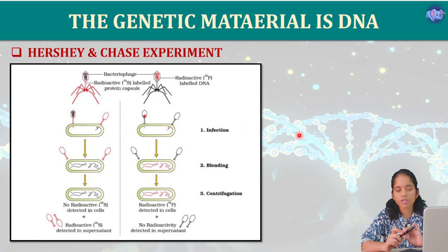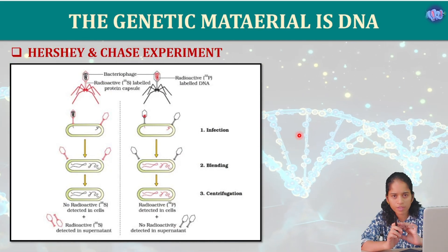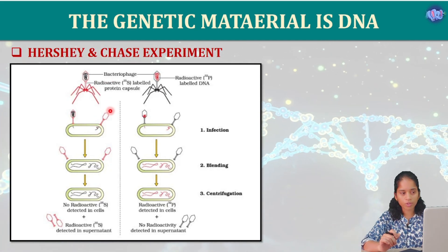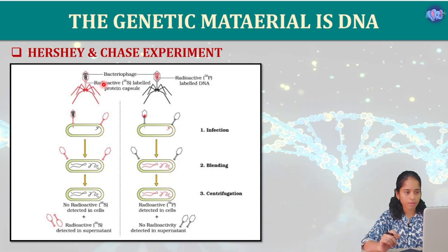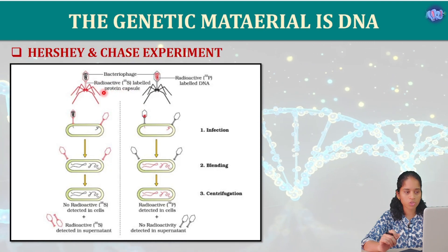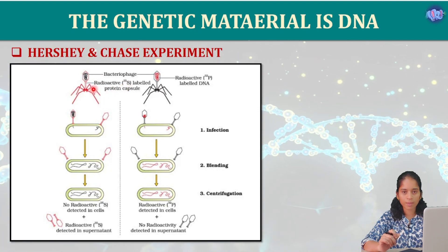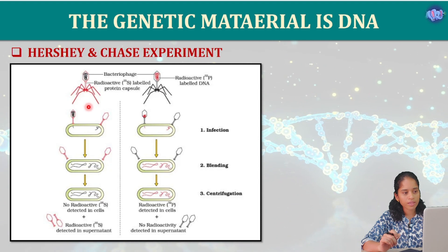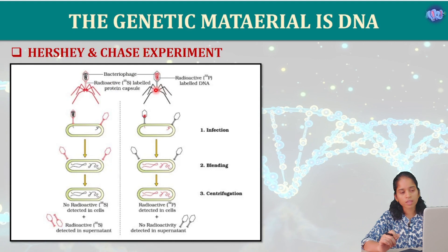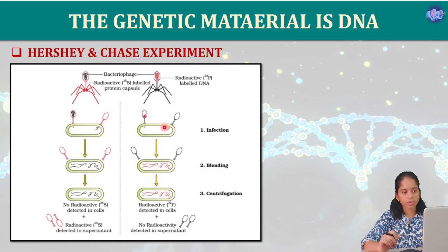In the actual experiment there are three steps. The first step is infection. These bacteriophages are used to infect bacteria. Bacteriophage with radioactive P32-labelled DNA infects the bacteria. The genetic material — the DNA — is injected into the bacterial cell during infection.